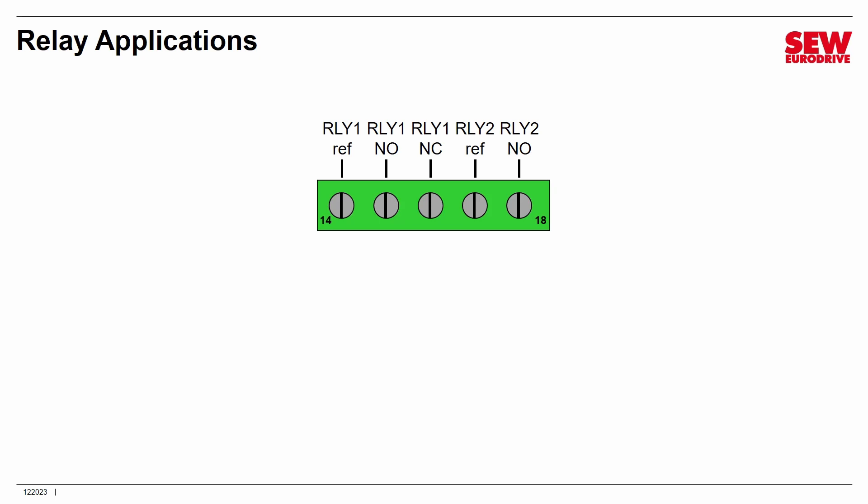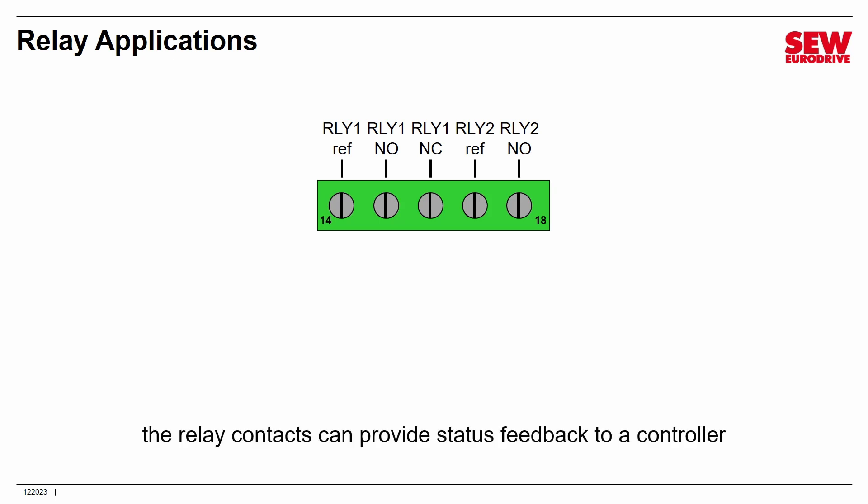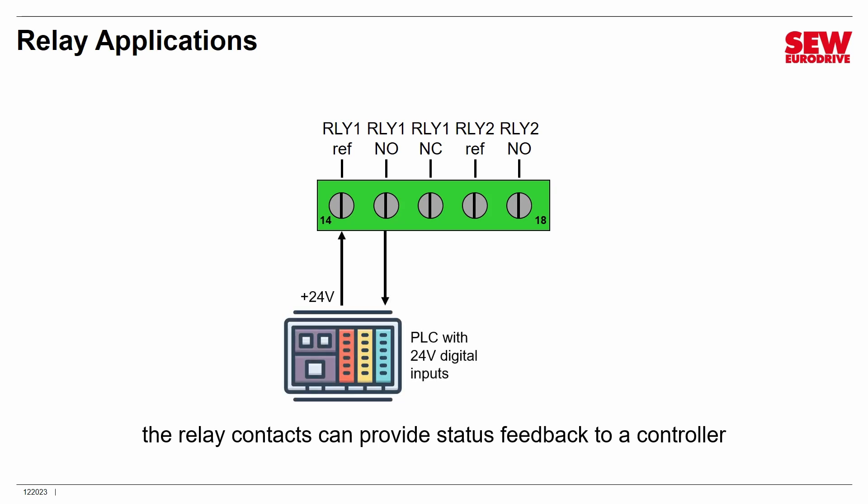There are many possible applications for the VFD relays. They can provide status feedback to a controller such as a PLC operating the VFD in terminal control mode. For example, connect the PLC's 24-volt supply to the relay reference contact, then connect the normally open or normally closed contact to one of the PLC's 24-volt digital inputs. You can then configure the relay within the VFD to tell the PLC if the VFD is healthy, running, faulted, or operating at a certain speed.